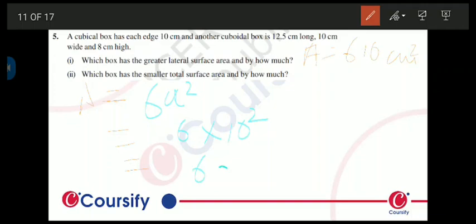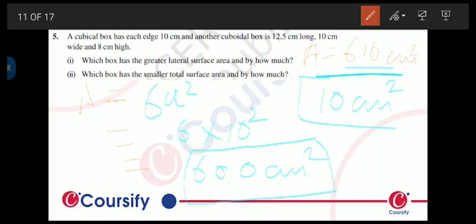By comparing this value and this value we find that the total surface area of cuboidal box is greater than the cubical box that is given to us. By how much amount? 610 minus 600 equals to 10 centimeters square.